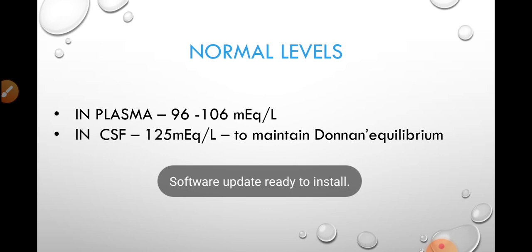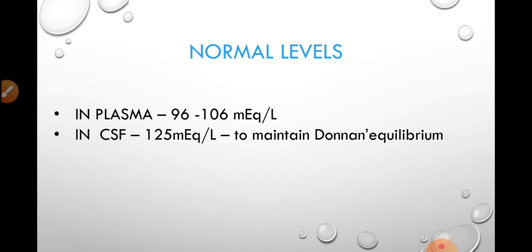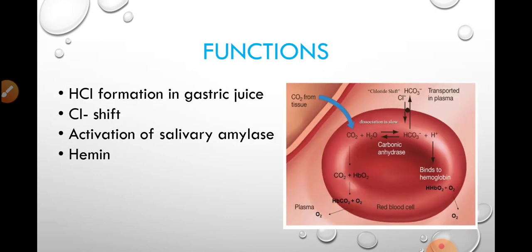In CSF, the chloride level is 125 milliequivalents per liter. Comparing to other body fluids, CSF has the highest concentration of chloride ions. This is to maintain Donnan equilibrium — since protein levels in CSF are low, chloride levels are increased to compensate and maintain the Donnan equilibrium.